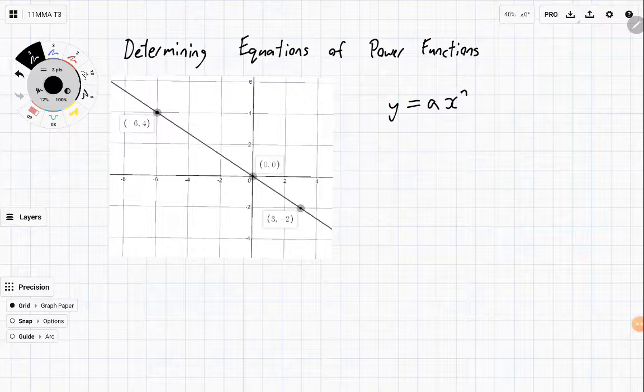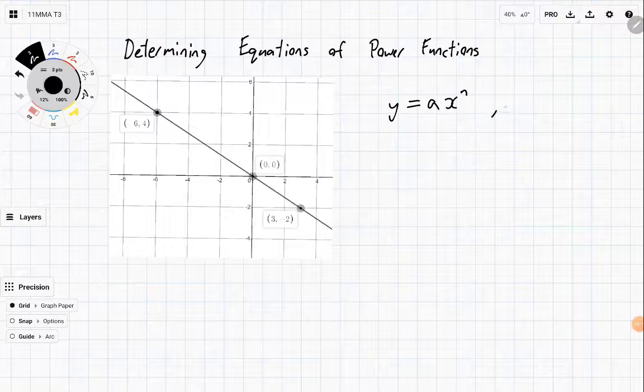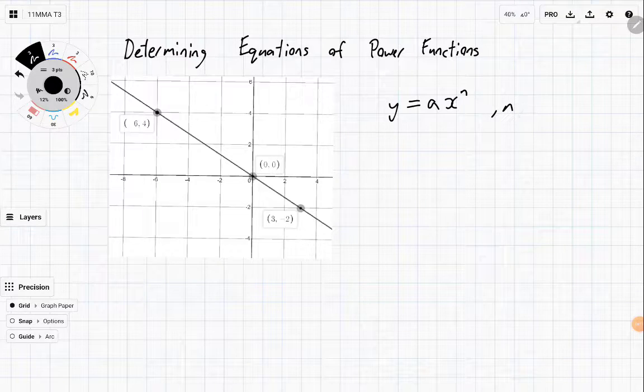If they go through the origin, basically if they go through (0,0) at some point, then all you need to work out is n based on the shape of it, and a is going to be solved for algebraically.